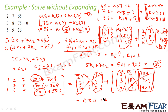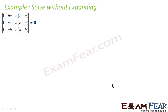We have solved this equation without even expanding it, just by using the power of properties. The catch in such questions is to find k1 and k2 so you can break the bigger numbers, split the determinant into smaller determinants, and use properties to prove they are 0.